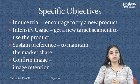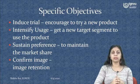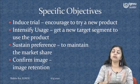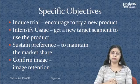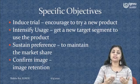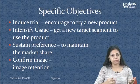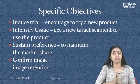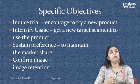Coming on to the specific objectives. First, it induces trial — encouraging consumers to try a new product. For example, whenever a new green tea enters the market, you would find sachets stuck to the morning newspaper. That is ideal because morning newspapers are accompanied with a cup of tea, and a free trial offer of green tea with the newspaper induces trial. Second, it intensifies usage, getting a new target segment to start using a product. This is prevalent in mobiles where competition is hard and technology gets outdated fast, with new models coming in all the time.